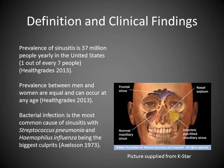Prevalence of sinusitis is 37 million people yearly in the United States — that's roughly one out of every seven people. Prevalence between men and women are equal and can occur at any age. Bacterial infection is the most common cause of sinusitis, with Streptococcus pneumoniae and H. influenzae being the biggest culprits.